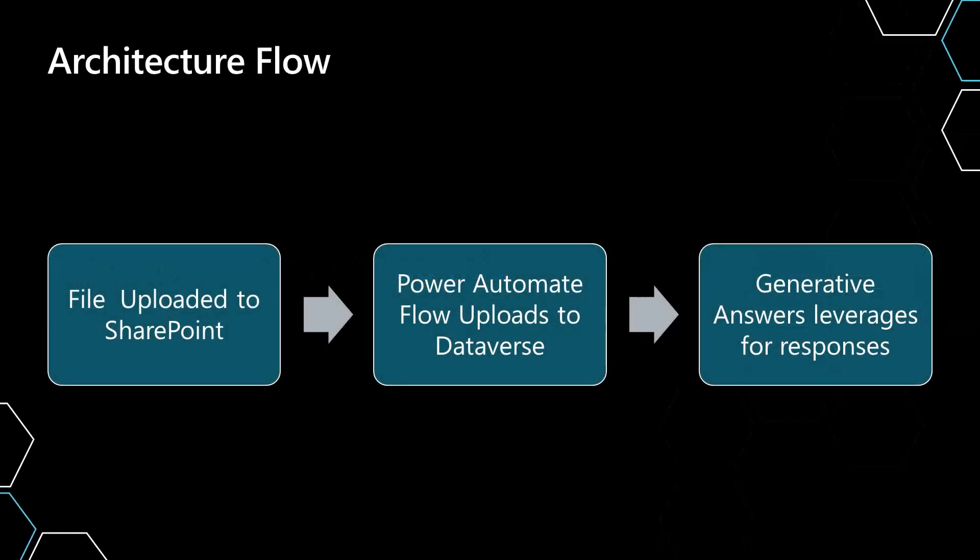Let's talk about the architecture flow of how this actually works. The first thing you need is a document library where you're going to upload the files to SharePoint. Then we're going to have a Power Automate flow that uploads the document to Dataverse when it sees a new file dropped in that particular location. The last part is that it will make it available in generative answers so that you can actually ask questions over that particular document.